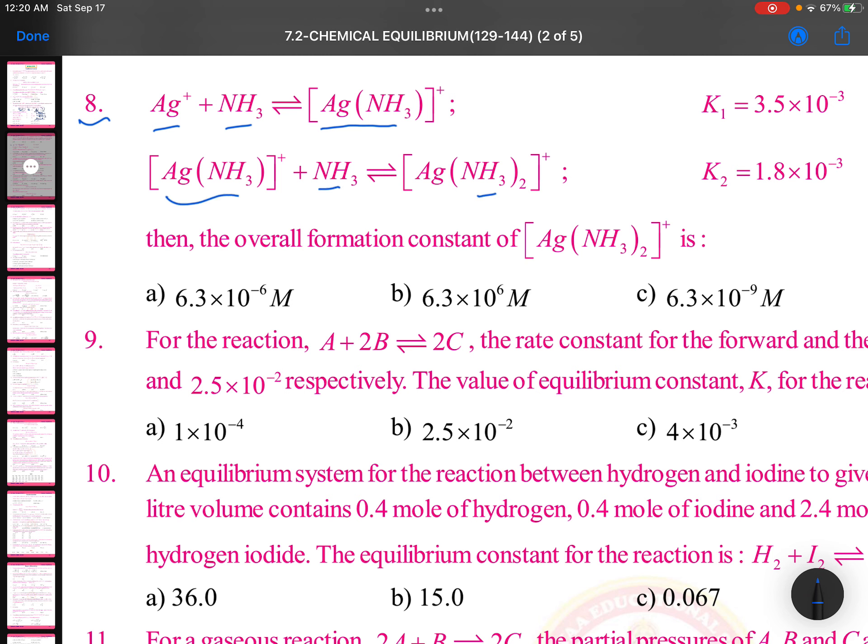form one more complex. Here K1 is equals to 3.5 × 10 to the power of minus 3, here K2 is 1.8 × 10 to the power of minus 3. The overall formation constant of Ag(NH3)2 taken twice, that means from